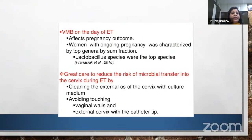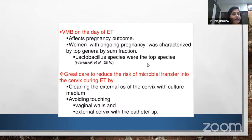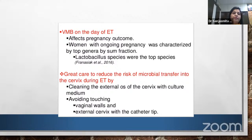On the day of embryo transfer, we should consider the vaginal microbiome status as it affects pregnancy outcome. Ongoing pregnancy was characterized by higher fractions of lactobacillus species. If lactobacillus species are high and bacterial vaginosis is absent, pregnancy success rate is high in ART. We should take care to reduce the risk of microflora transfer during embryo transfer by cleaning the external os of the cervix with culture medium, and avoid touching the catheter tip to the vaginal wall or external cervix.